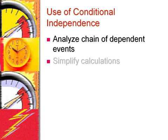Conditional probabilities allow us to think through a sequence of uncertain events. If each event can be conditioned on its predecessor, a chain of events can be examined. Then, if one component of the chain changes, we can calculate the impact of the change throughout the chain. In this sense, conditional probabilities show how a series of related causes affect each other and subsequently affect a sentinel event.